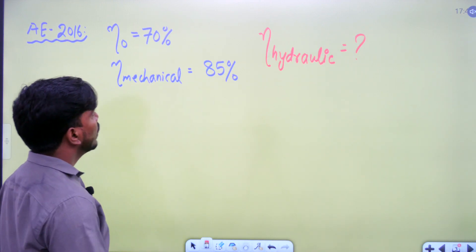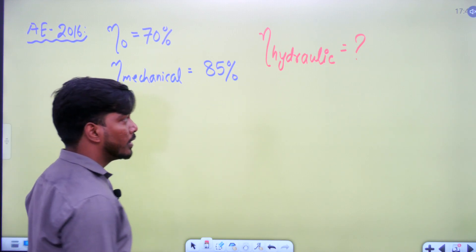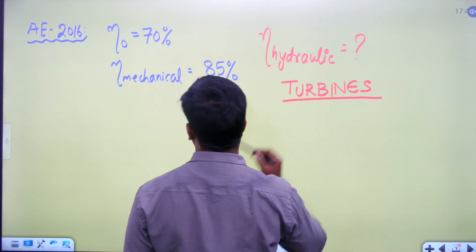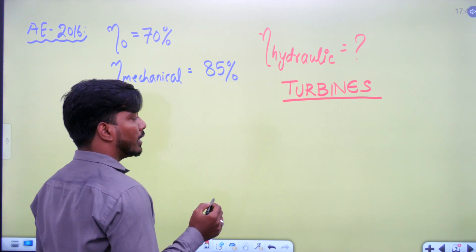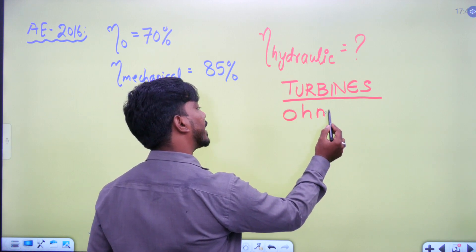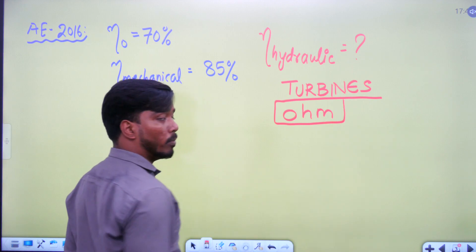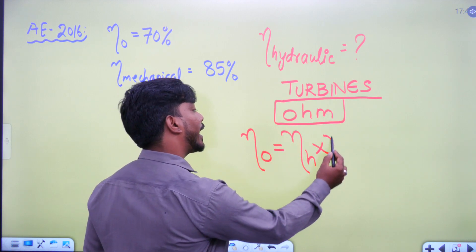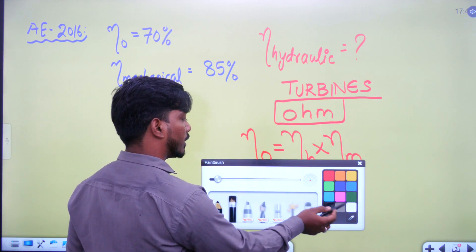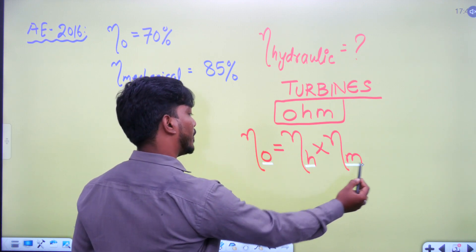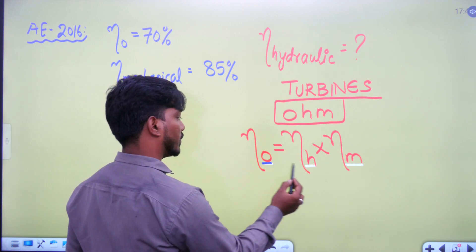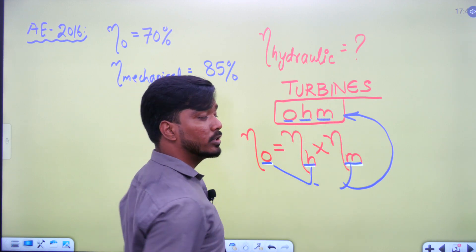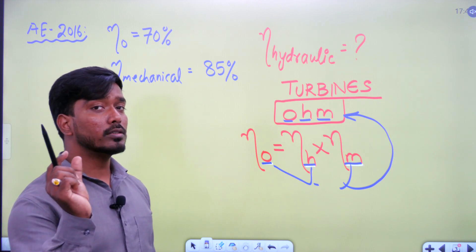This question is from hydraulic turbines — it appeared in the previous AE 2016 exam. The relation to remember is: overall efficiency equals hydraulic efficiency multiplied by mechanical efficiency. The keyword to remember is 'OHM' — O for overall, H for hydraulic, M for mechanical — these three combine to form the word OHM.